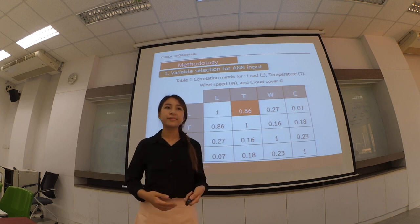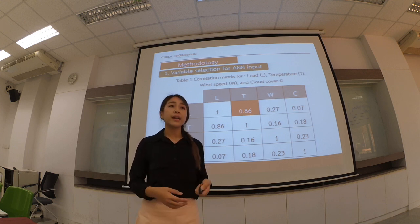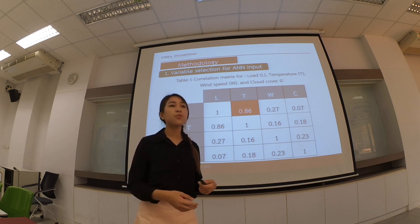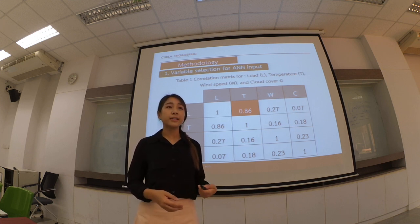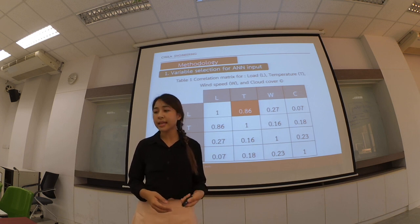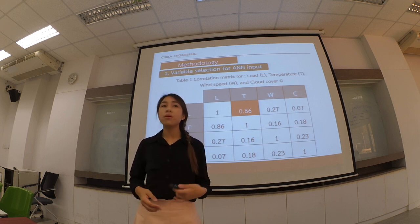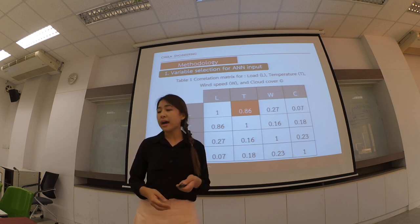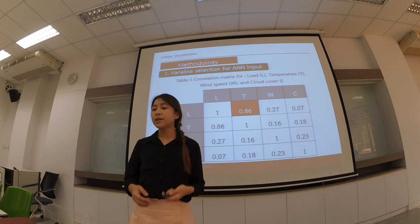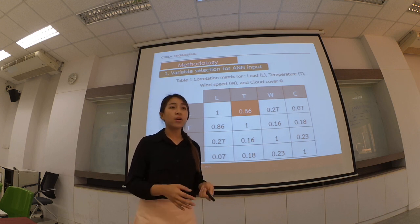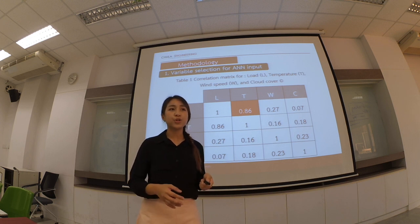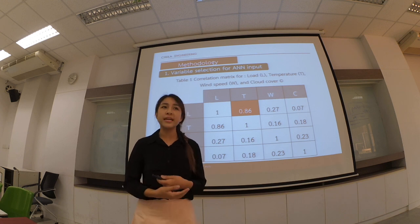Methodology for load forecasting. Step 1: Variable selection for the ANN input. The correlation method is used to select variables significant to the load system, by determining the correlation between load and temperature, load and wind speed, and load and cloud cover. You will see that the correlation value between load and temperature is high, so the author chose temperature as the vector variable input for the ANN.